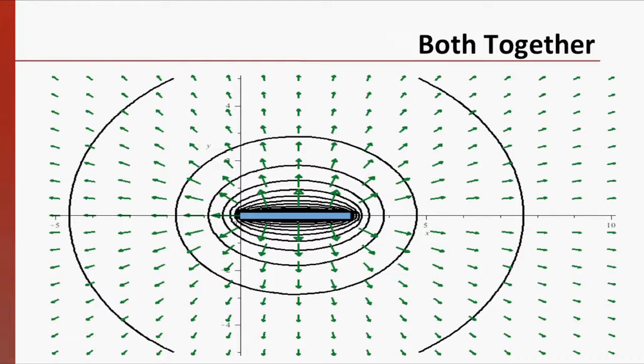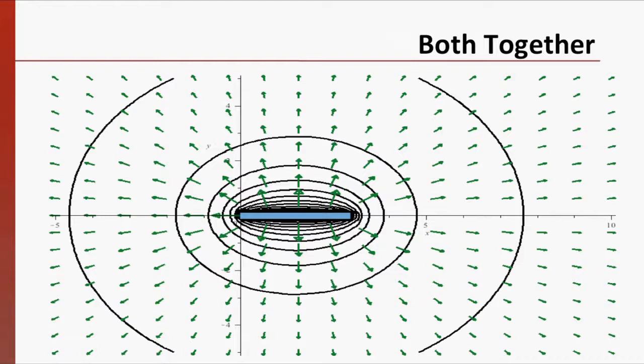Displaying both the equipotential lines and the field vectors at once, we get this picture. You can see that the equipotential lines are always perpendicular to the field. Since charges create both fields and potentials, both will be present all the time, though we might only draw one or the other.